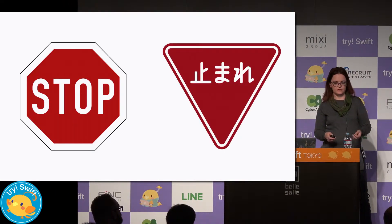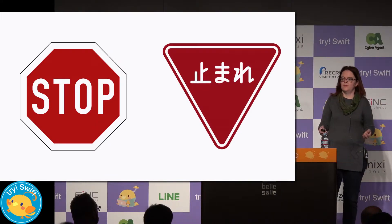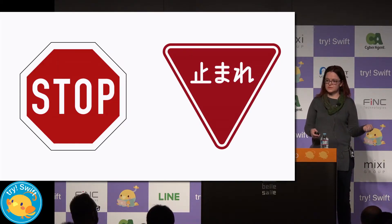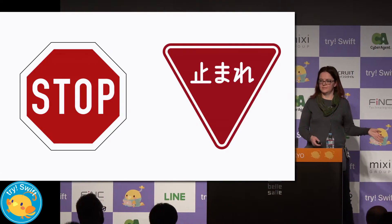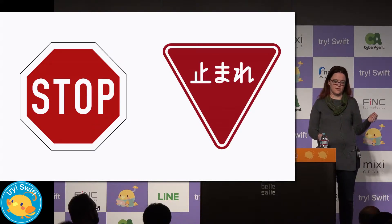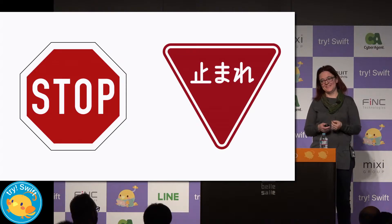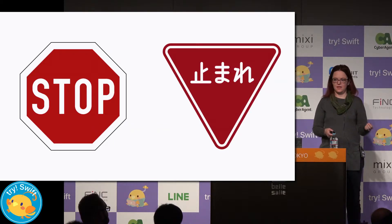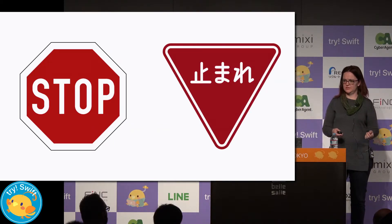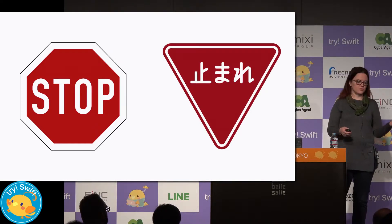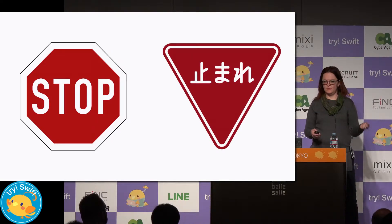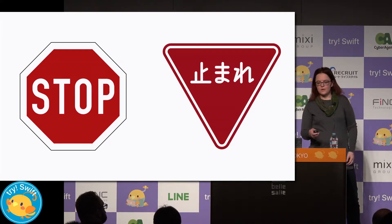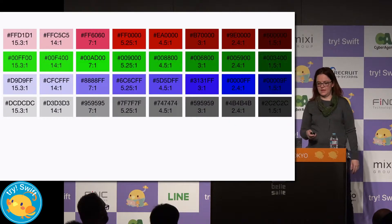Another aspect of contrast I want to talk about is color. Color is a very powerful way to communicate an idea. Even before I'm close enough to read the word on a stop sign, I can see that it's a stop sign because of the color. And for the stop sign on the right, I can't read it at all — I don't know Japanese yet — but I still know, because it's red, that it's probably a strong caution and I should slow down and pay attention. So color is a very powerful communication tool, and we don't want to limit ourselves to black and white just for the sake of contrast. So how much color can we use and still have good contrast?